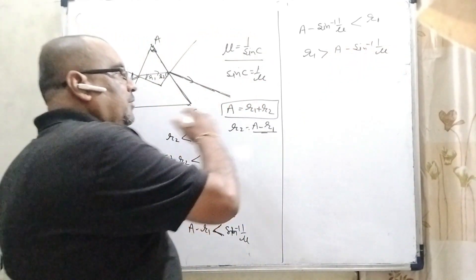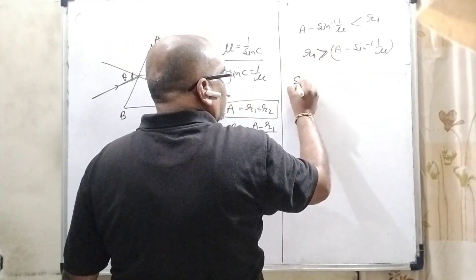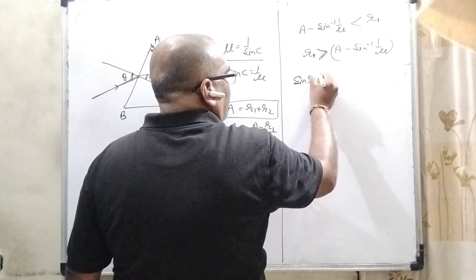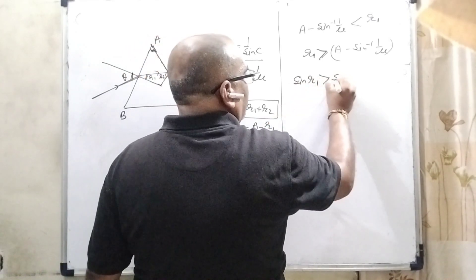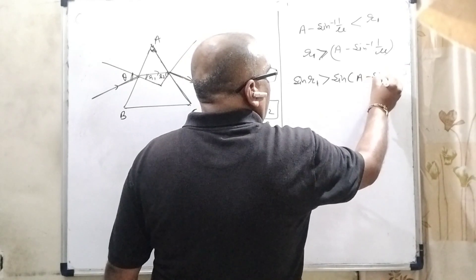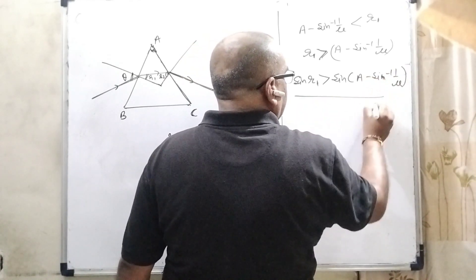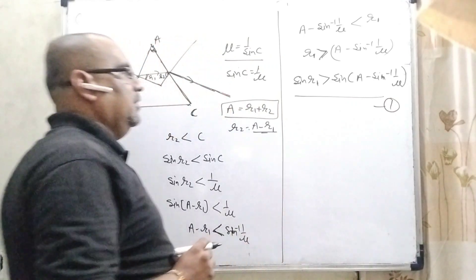So here this is R1 positive or it can be written as R1 is greater than A minus sin inverse 1 by mu. This is considered a first equation. Now again using sin angle, convert into sin angle this R1. So it becomes sin R1 is greater than sin A minus sin inverse 1 by mu. This is considered a first equation. Is it okay?